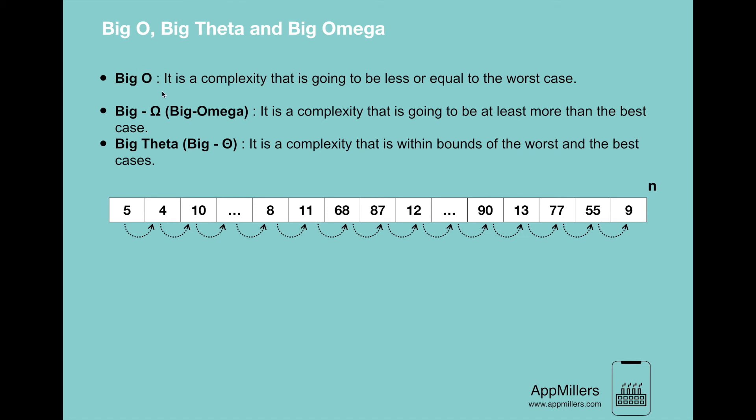Then the next notation is Big Omega. It's a complexity that is going to be at least more than the best case. It is different from the Big O notation. Here we measure the minimum time that we need to execute an algorithm. There might be cases that we want to know the minimum time of algorithm execution, which means that if the best scenario for the execution of an algorithm is 2 seconds, in terms of Big Omega, it will never be less than 2 seconds. For example, if we want to sort 100 numbers and we know that in the best case it takes 2 seconds, it will never be less than 2 seconds. Sometimes this information is useful for us.